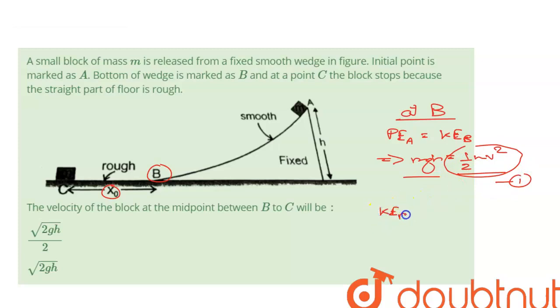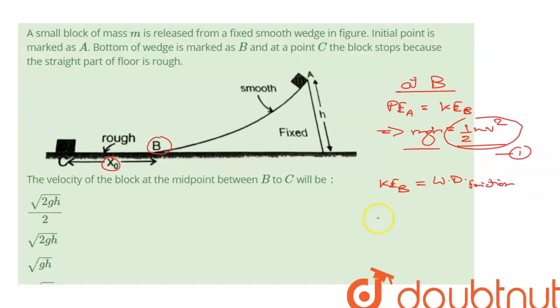This entire kinetic energy that the block had at B was spent in doing work against friction. For finding out the work done due to friction, we need frictional force times the displacement, that is x0, and kinetic energy 1/2 Mv squared. Let's mark it as equation number 2.